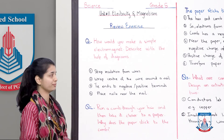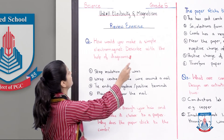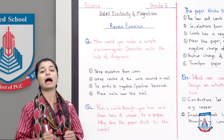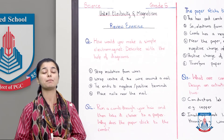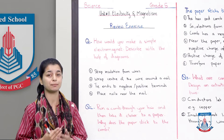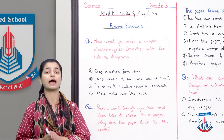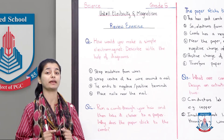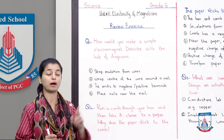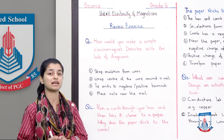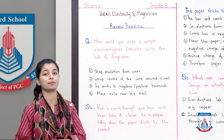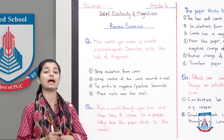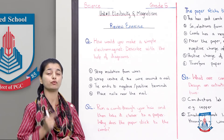Now let's read the first question: How would you make a simple electromagnet? Describe with the help of diagrams. I will tell you the names for the diagrams and give you the detailed answer. The reason is that in your first lecture about this chapter, we discussed in detail how an electromagnet is made. Moreover, on the very first page of this chapter, you have the entire diagram for making an electromagnet, shown in steps.